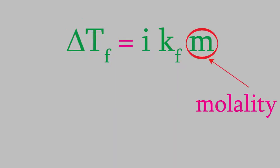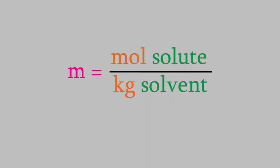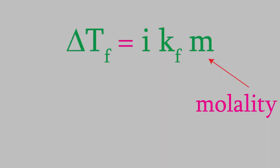M is the molality. In case you've forgotten, this is one of the new concentration units we looked at in video number 5. The molality is the moles of solute divided by the kilograms of solvent. So, this shows us that the concentration of the solution affects the freezing point.